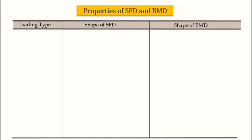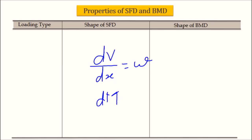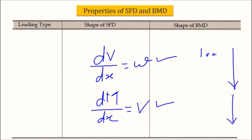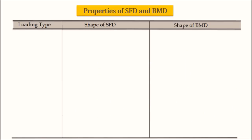I want to recall those two fundamental relations from session 1. First, the derivative of shear force is the rate of loading on the beam, and the derivative of bending moment is the shear force. Based on these two relations, we derived the relationship between the loading diagram, shape of SFD, and BMD. Going from loading diagram towards SFD then BMD means integrating, and going from BMD towards loading diagram means differentiating. Let us have a recap on all these things.